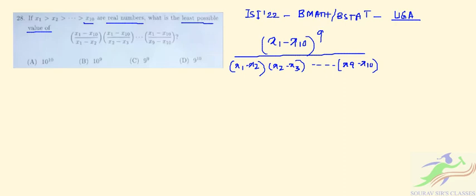Right. So here all x1 is greater than x2 which is greater than x10. So these will be all positive. So we know that the arithmetic mean of a sequence is always greater than the geometric mean.